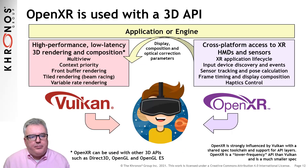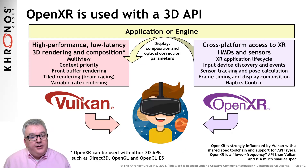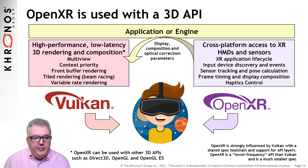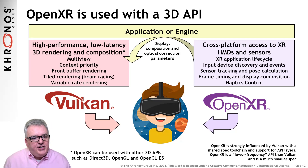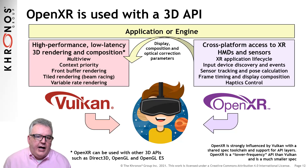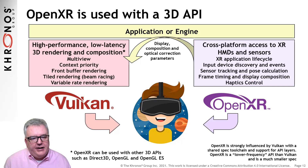OpenXR contains everything an application needs to drive XR devices in a system. This includes device discovery, event processing, sensor tracking and pose calculations on the input side, and frame display timing and composition, plus haptics control on the output side. OpenXR deliberately doesn't include any 3D rendering functionality, so an OpenXR application will use a rendering API such as Vulkan to generate imagery. A new generation API such as Vulkan provides the high performance and low latency vital for a compelling XR experience, and OpenXR provides all the display parameters necessary for the application to run portably on any OpenXR-compliant device.